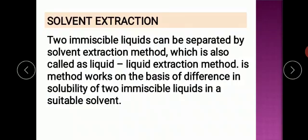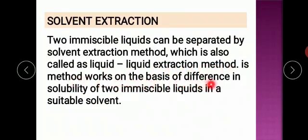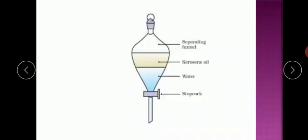Finally, solvent extraction. Solvent extraction is used to separate two immiscible liquids — that is, liquids which do not mix. For example, oil and water, or any two liquids with a difference in density, do not get mixed up. You can also call this method liquid-liquid extraction. This method works on the basis of the difference in solubility of two immiscible liquids in a suitable solvent. I will use a special apparatus called a separating funnel. I will take a mixture of kerosene and water — kerosene will be on top due to its low density, and water will be at the bottom having higher density.